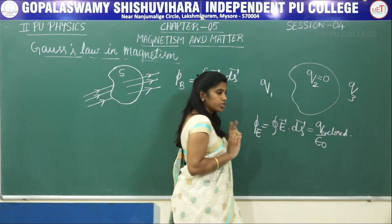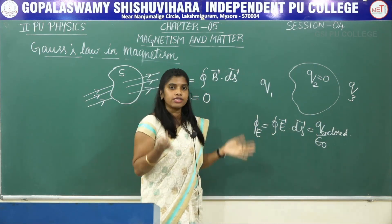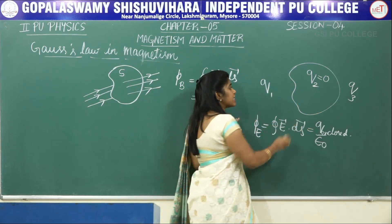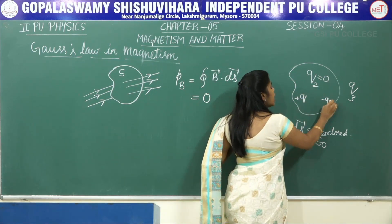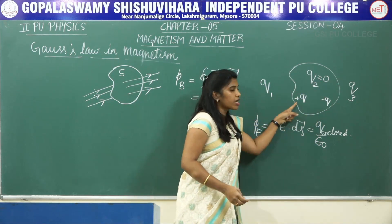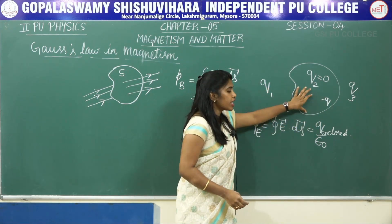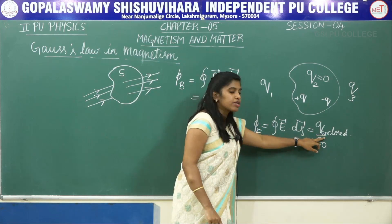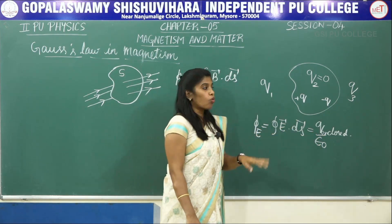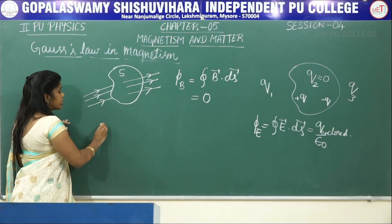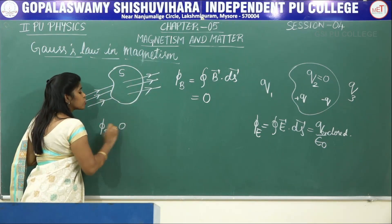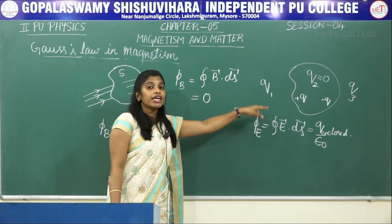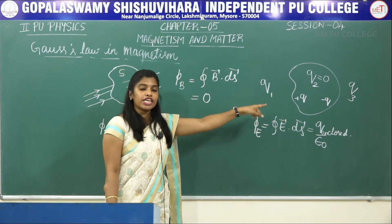If the net charge becomes equal to 0, then the electric flux inside that surface is 0. How can I make this net charge equal to 0? By placing an electric dipole. If I have a +Q and a -Q charge, the net charge becomes 0. When I place an electric dipole inside this closed surface, the net charge becomes 0 and therefore the electric flux will be 0.